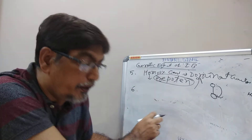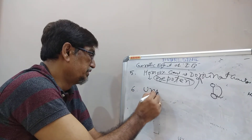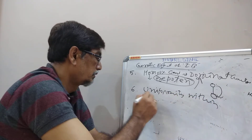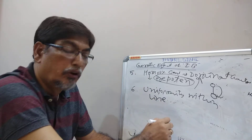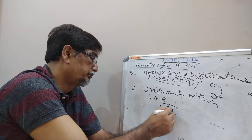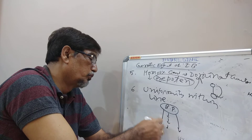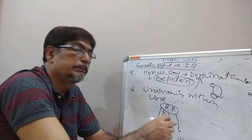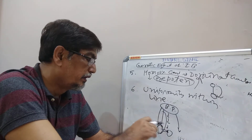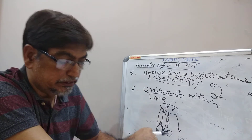Another effect of inbreeding is increased uniformity within the lines. If you see that this is the base population, and as inbreeding proceeds, different lines will form. Within the same lines, the variability of animals will be less, but between the lines there will be more difference. So this is called uniformity within the lines.